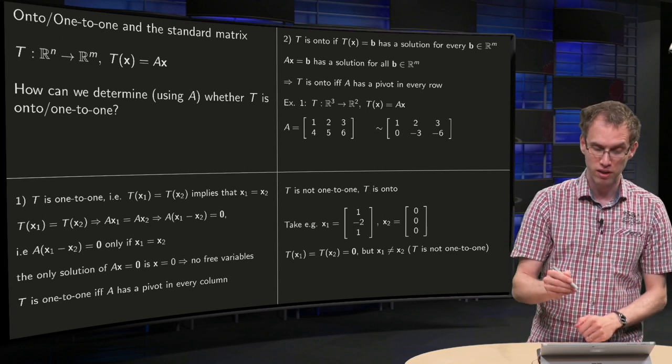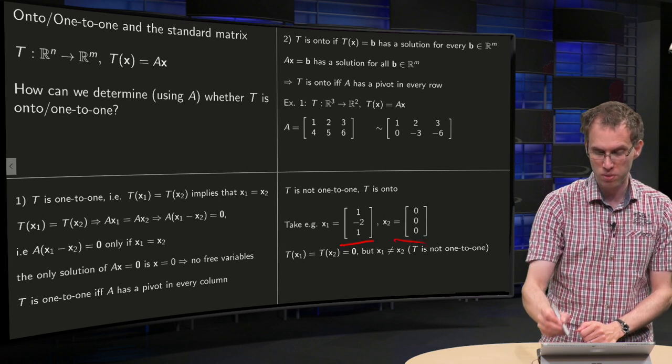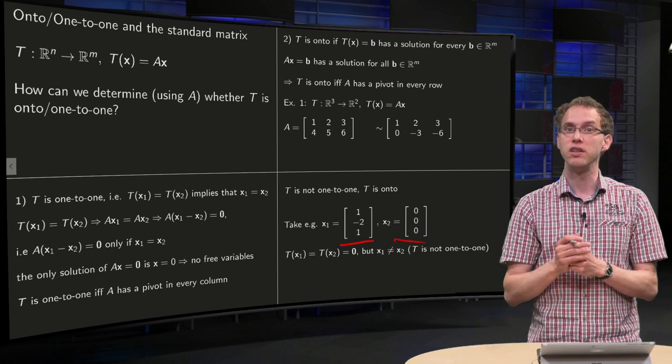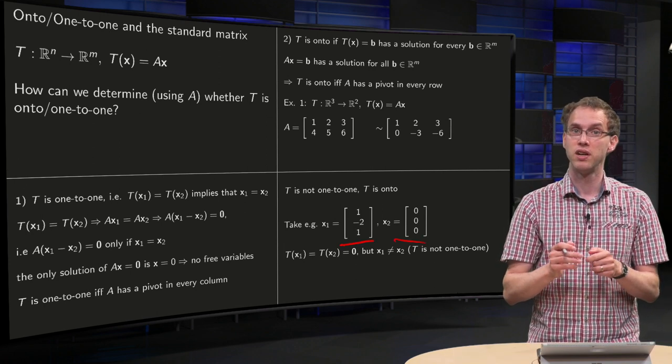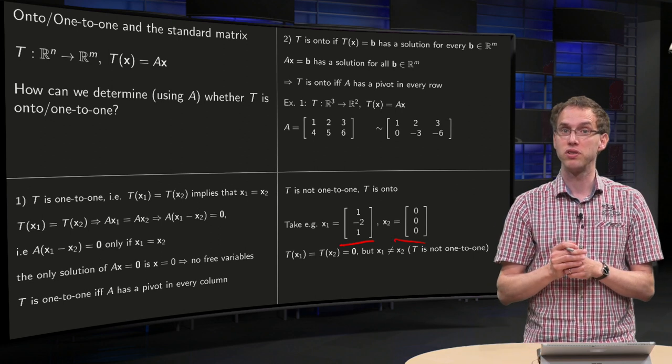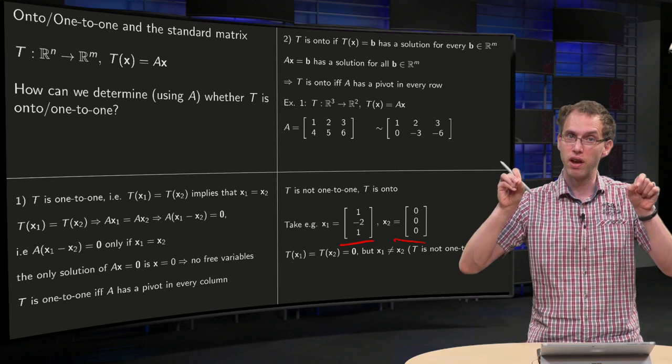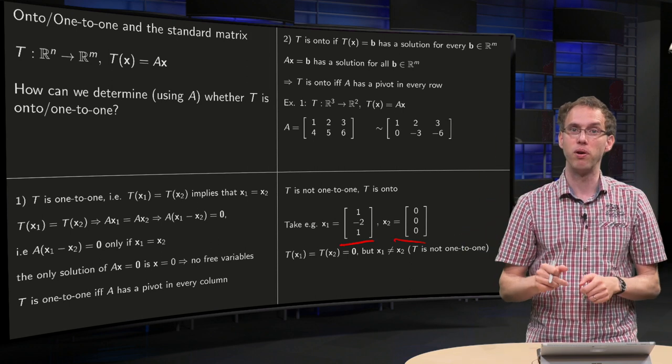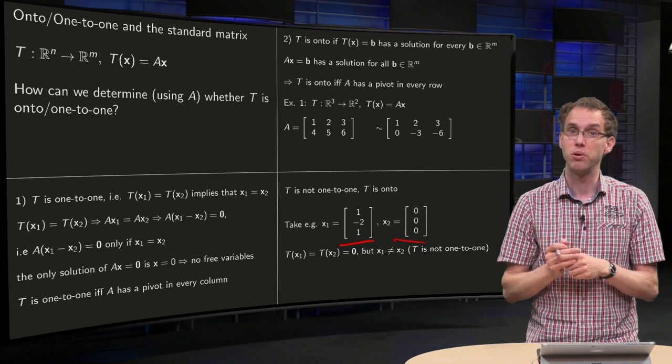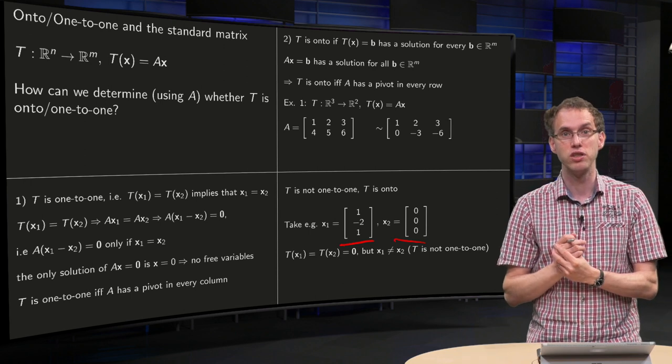And we can check that. For example, if you take this X1 and this X2, if you compute T(X1) equals A times X1, T(X2) equals A times X2, you get in both cases a zero vector. So we have two different vectors mapping to the same point. So here you already see also that your transformation T is not one-to-one.